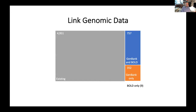Prior to data enhancement, 5.5% of the records had information about associated sequences. We identified an additional 1,100 specimens with which we could associate new sequences that we found.